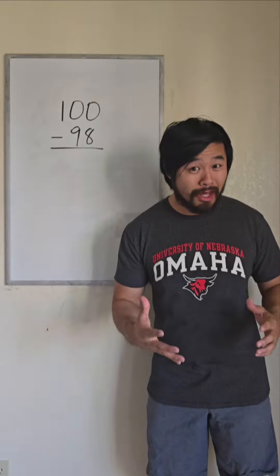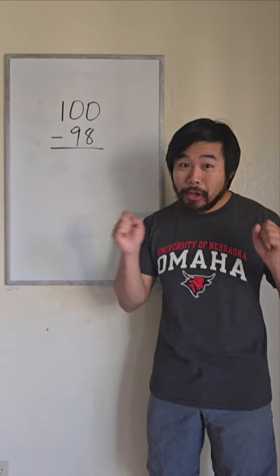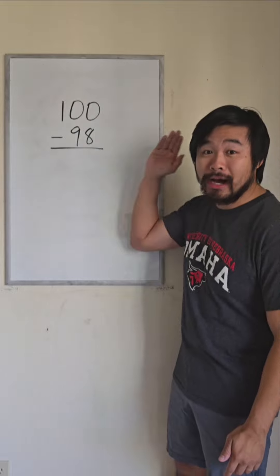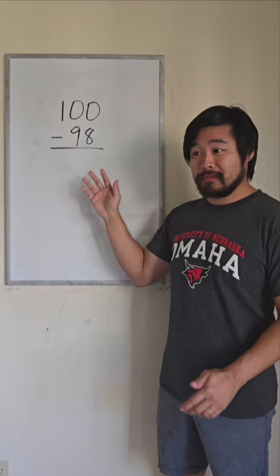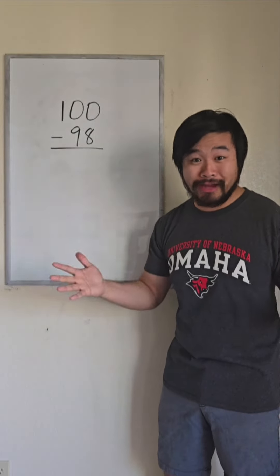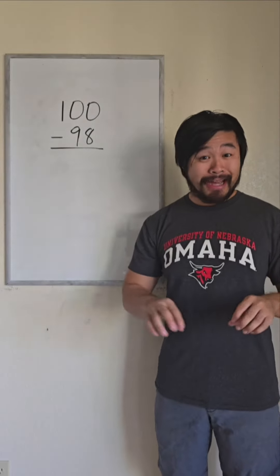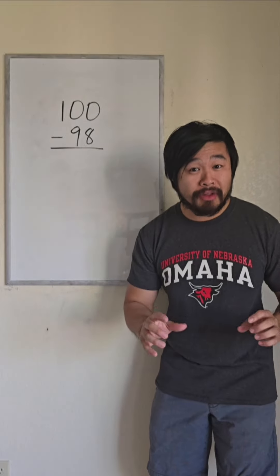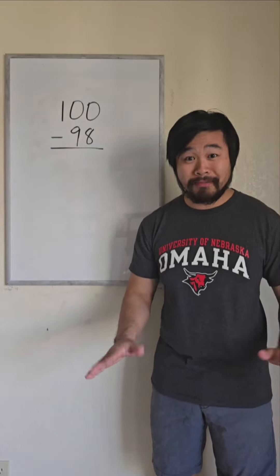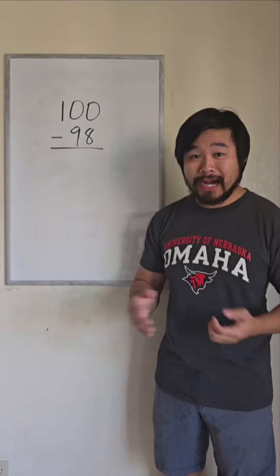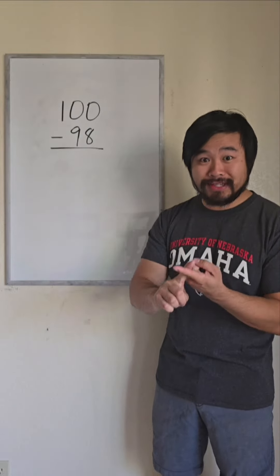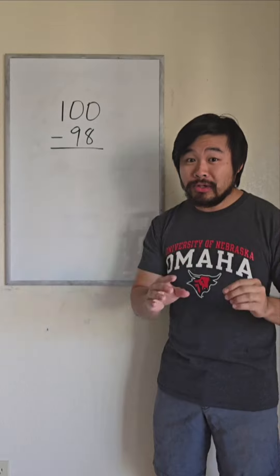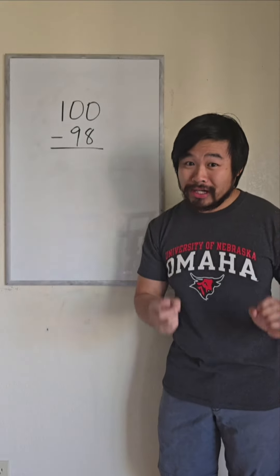A lot of people's first step in a math problem is to go straight to an algorithm. I've seen a lot of people do the standard algorithm for 100 minus 98. But if I had to give one piece of advice for these types of problems, I would say make sense of the problem first and then go from there. For subtraction, we could think: can I think of this as takeaway? Can I think of this as what's the difference? When we do that before going straight to an algorithm, we can build our number sense.